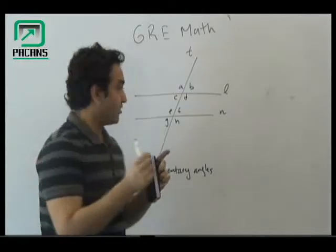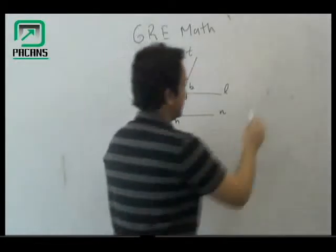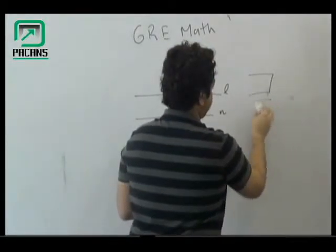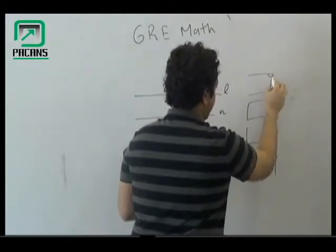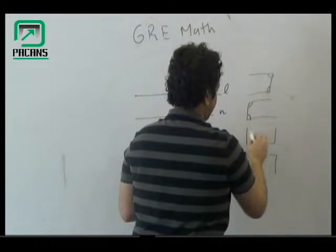And you also have to remember that whenever there is a C or a U formed, the angles are always going to be supplementary.